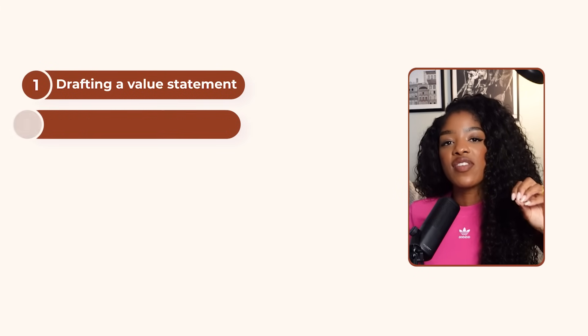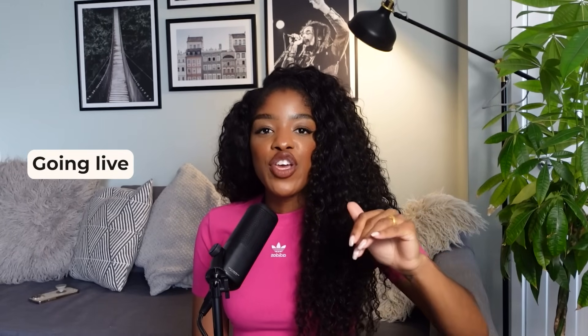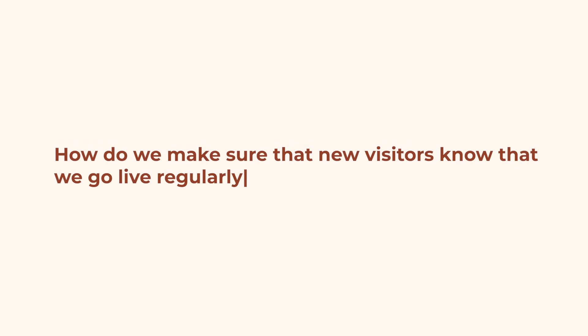The other thing that you can do is offer something exclusive, for example going live. If you go live on a regular basis you need to make sure you're telling new visitors about it. When you follow someone on Instagram you get a notification saying they're going live anyway, so we want to focus on how we make sure new visitors know that we go live regularly. If someone is browsing your page and sees that you go live every week, they're going to want to subscribe because you're giving them a reason to stick around. So if you do go live regularly, mention it in your bio or channel banner somewhere people can clearly see.